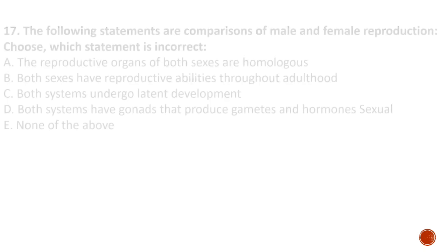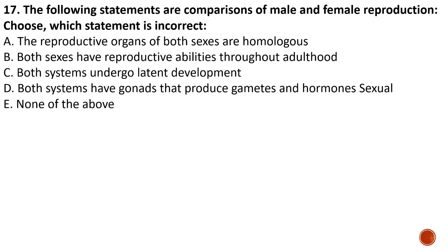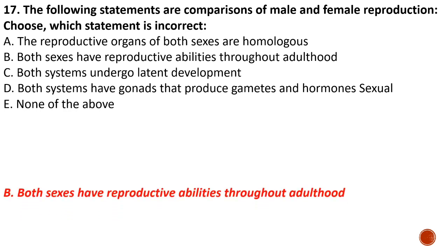Question number seventeen: choose the incorrect statement comparing male and female reproduction. A) the reproductive organs of both sexes are homologous, B) both sexes have reproductive abilities throughout adulthood, C) both systems undergo similar development, D) both systems have gonads that produce gametes and sexual hormones. The incorrect statement is B — both sexes have reproductive abilities throughout adulthood — which is correct for males but incorrect for females due to menopause, experienced in their late 40s and 50s.